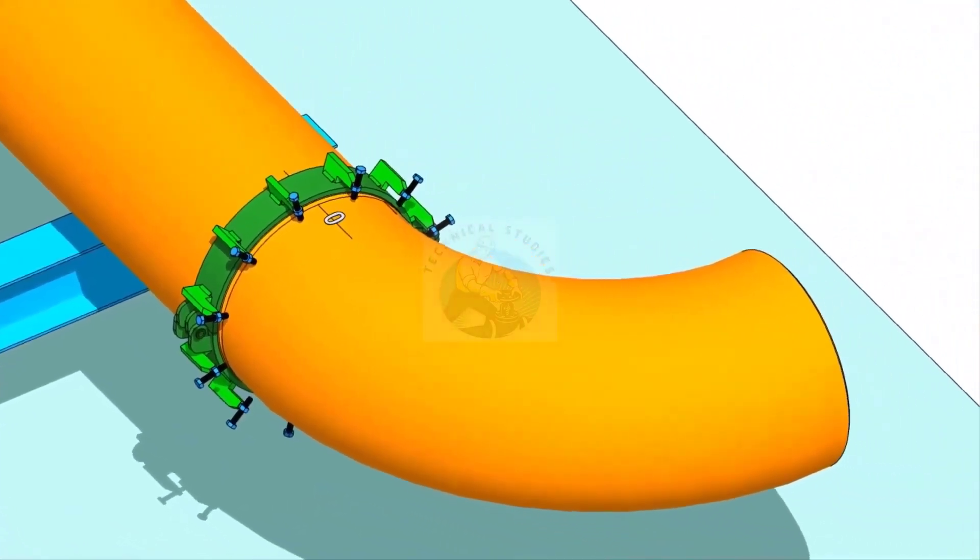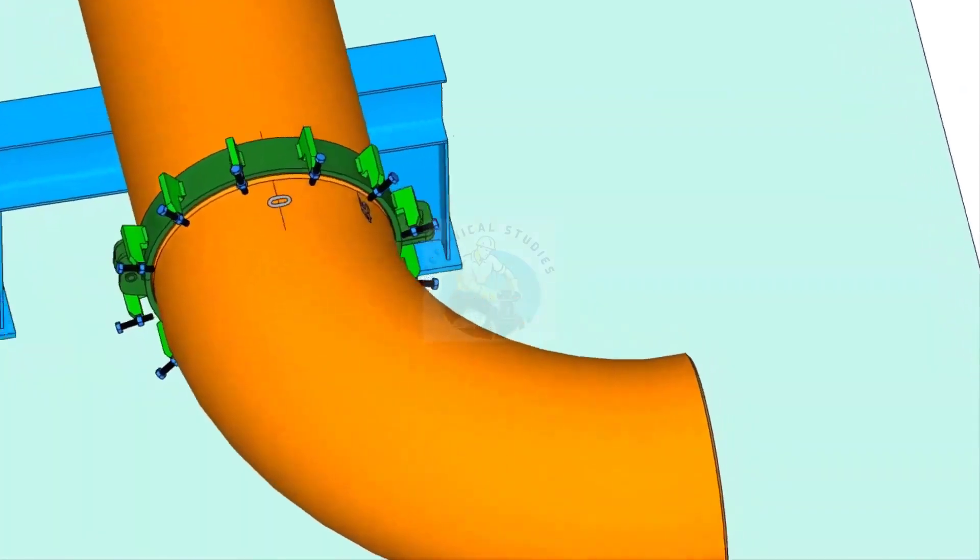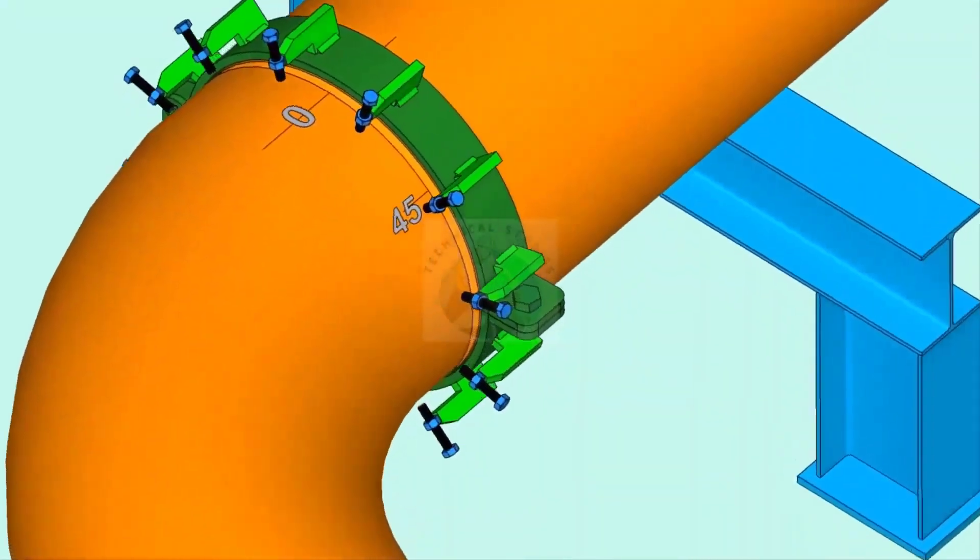Put the elbow on the pipe clamp. Make sure the marked end is near to the pipe. Arrange proper supports below the elbow.